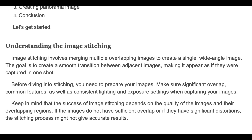Image stitching involves merging multiple overlapping images to create a single wide-angle image. The goal is to create a smooth transition between adjacent images, making it appear as if they were captured in one shot. Before diving into stitching, you need to prepare your images — make sure they have significant overlap, common features, as well as consistent lighting and exposure settings. The success of image stitching depends on the quality of the images and their overlapping regions. If the images don't have sufficient overlap or have significant distortions, the stitching process might not give accurate results.